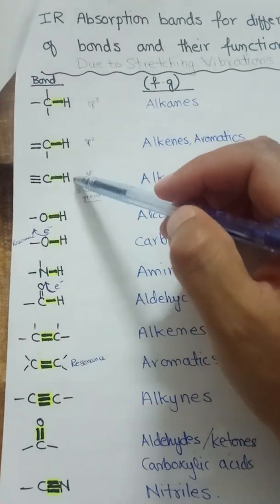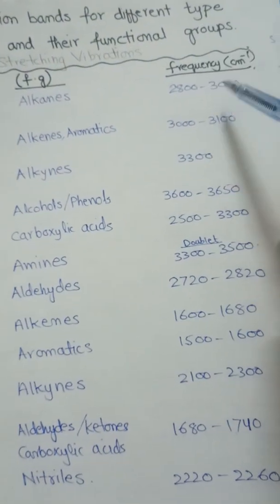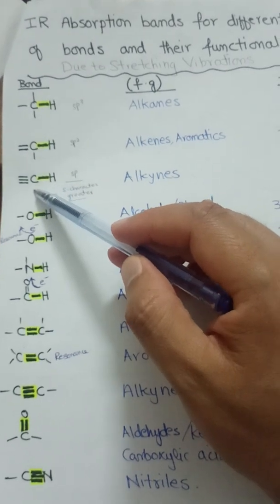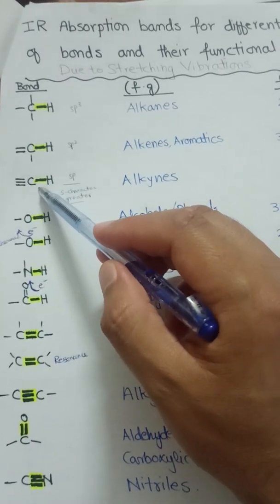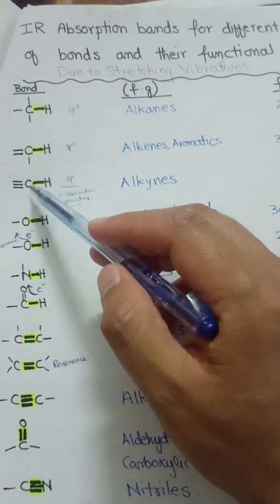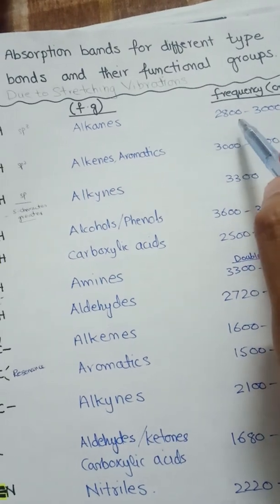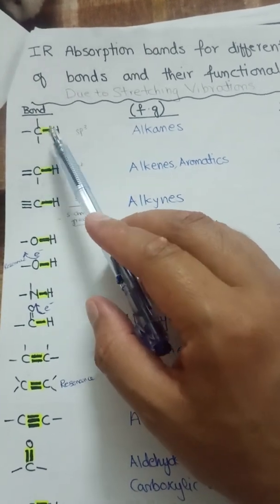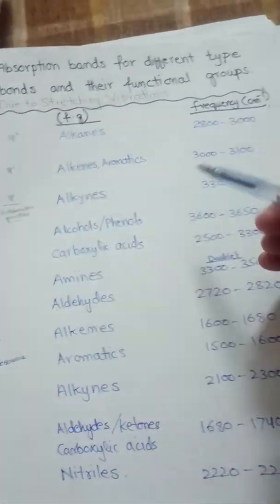In all three cases C-H stretching is present, but the absorption frequencies range from 2800 to 3300. As we move from sp3 to sp hybridization, the s-character increases. Greater s-character makes the C-H bond stronger and the hydrogen sits closer to the carbon, which is why the absorption frequency increases. This explains why C-H stretching frequencies differ in alkanes, alkenes, aromatics, and alkynes.